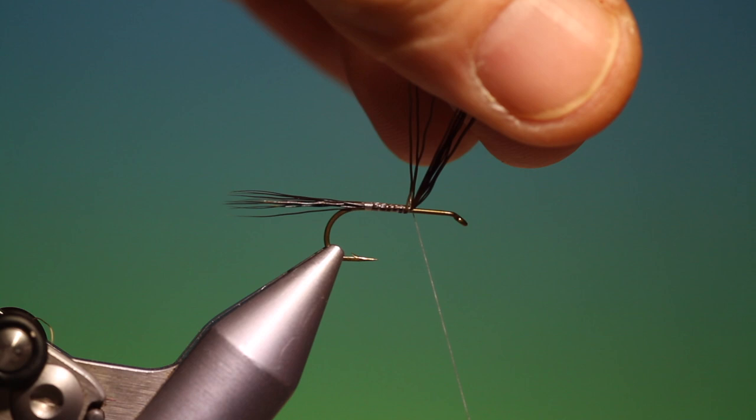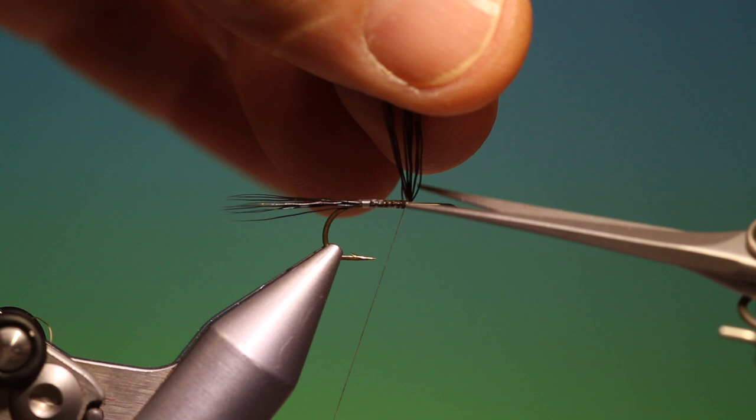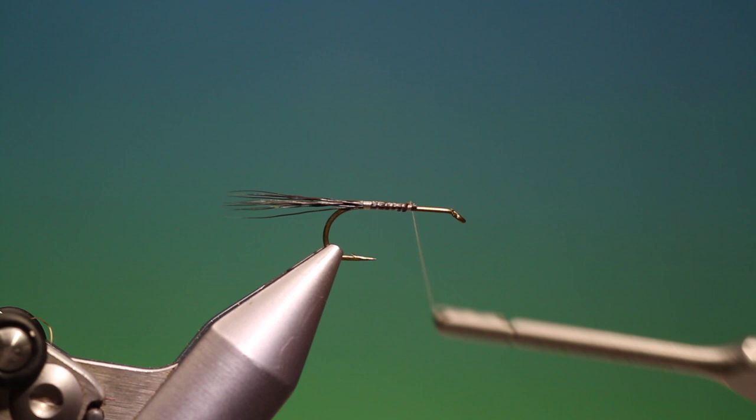So that'll do us there. I'll just come in here, trim those off, take the ends down, and go back up. Now I want to make a dubbing loop.